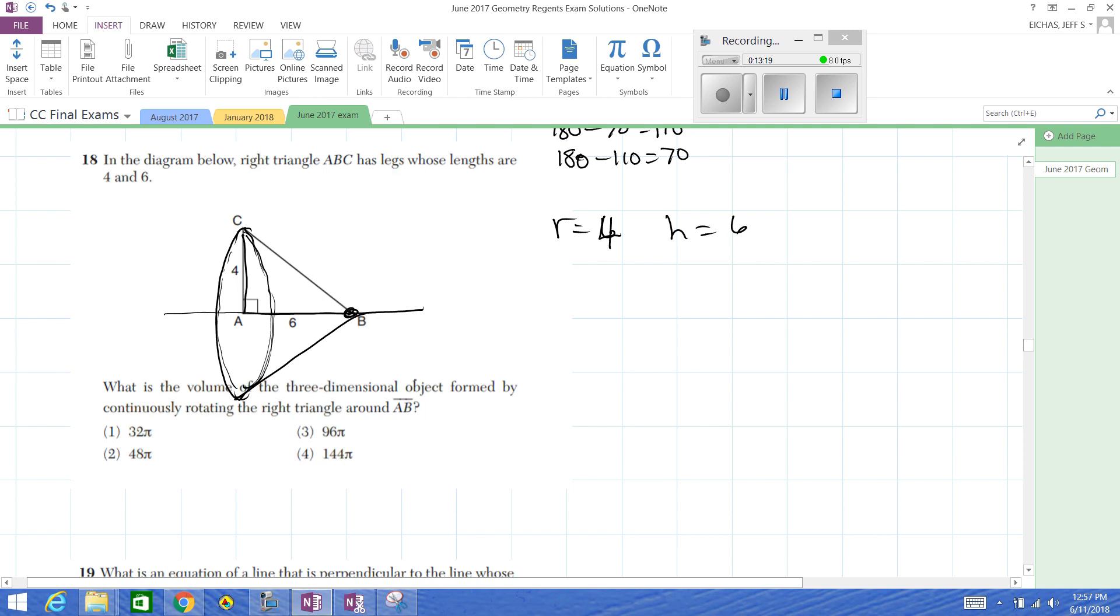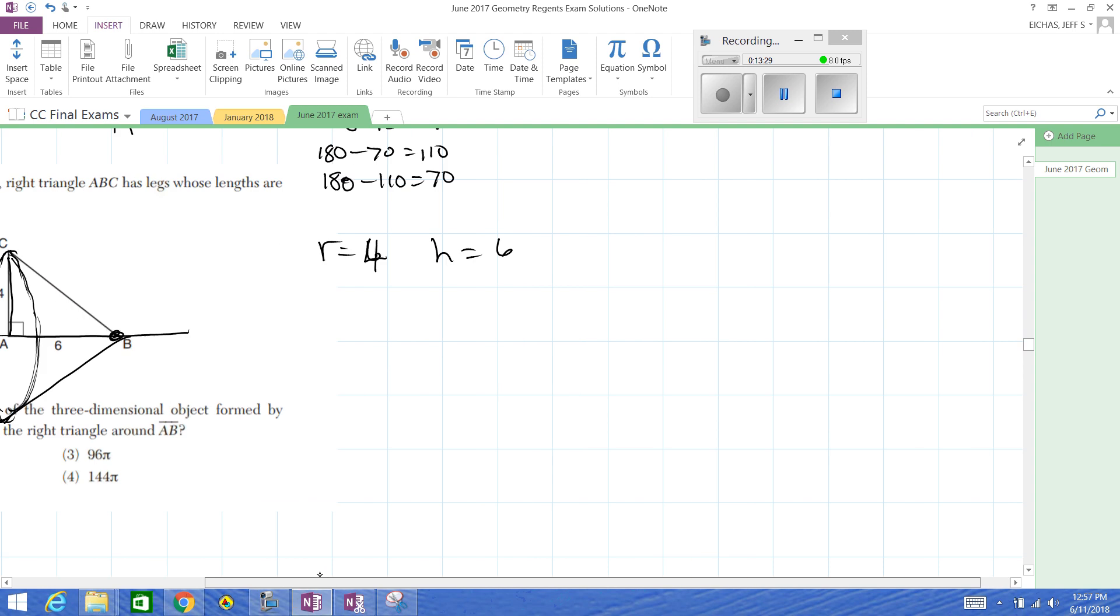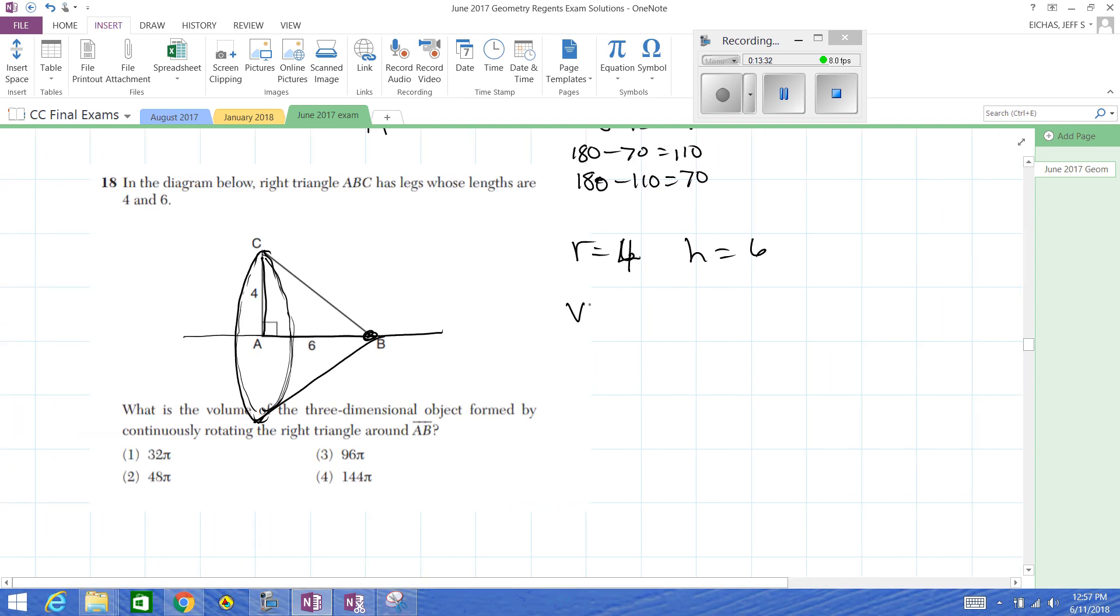And it looks like it's in terms of pi. They won't always tell you to leave it in terms of pi. The way they did it in this case is they just left the choices in terms of pi. So that's what I'm going to have to utilize. So my volume formula is one third pi r squared h for the volume of a cone. My radius is 4. My height is 6. And let's see, that looks like it's 32 pi. All right. That's it for this video. We'll finish off the part 1's in the next one.